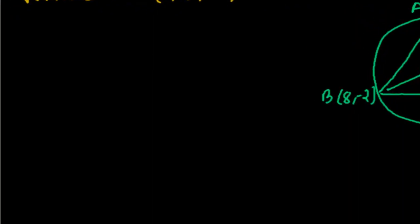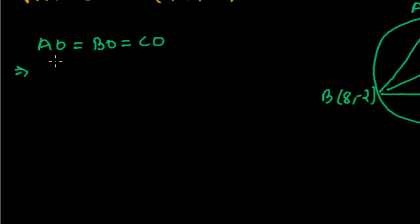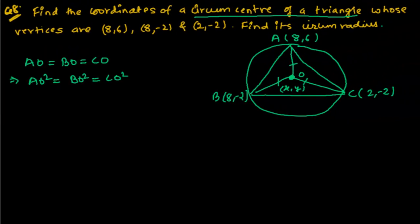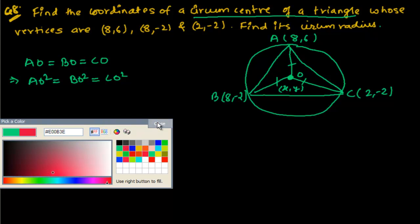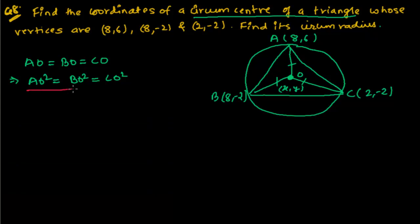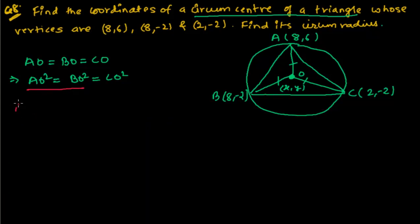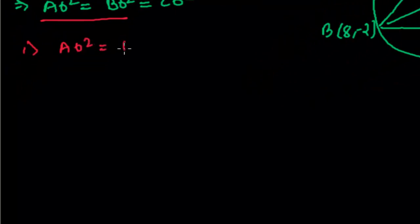Since AO = BO = CO, it must also hold that AO² = BO² = CO². Let me first take AO² = BO² to find one variable.